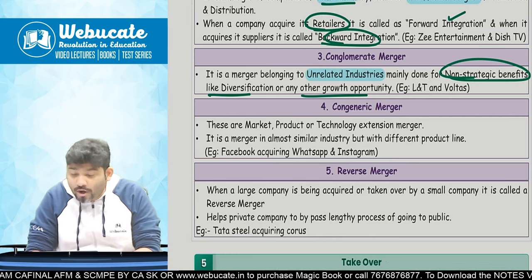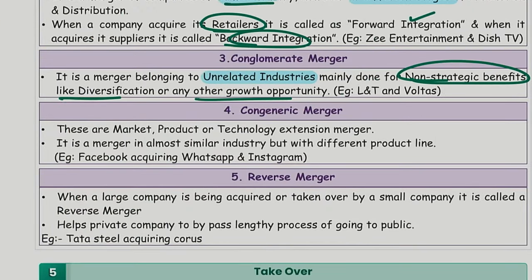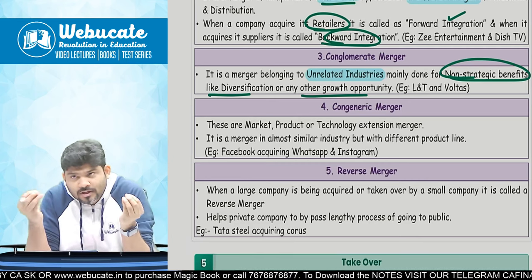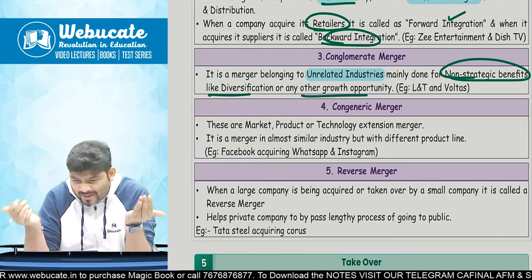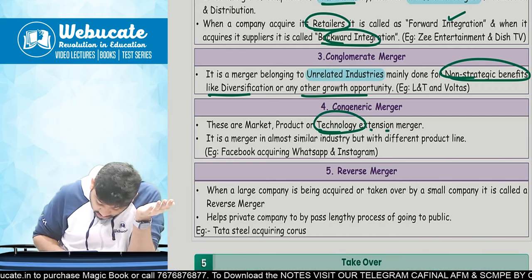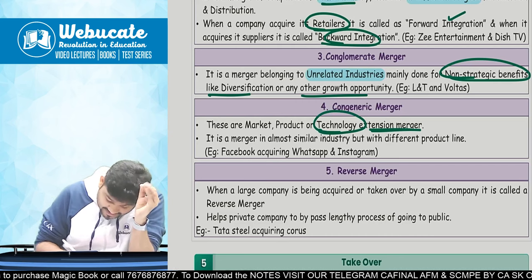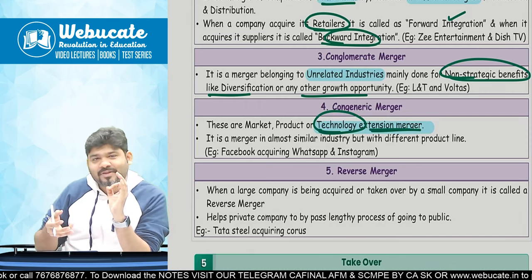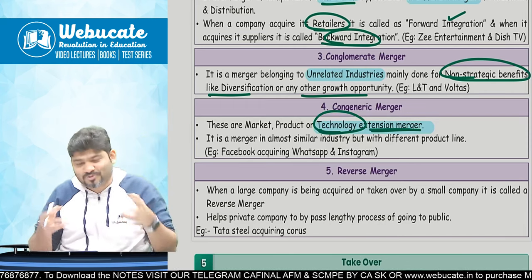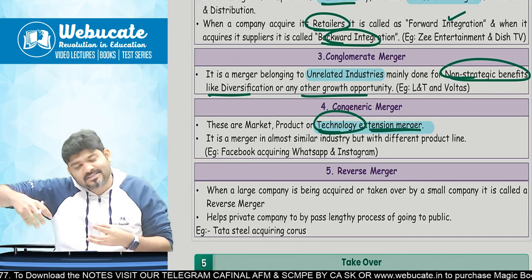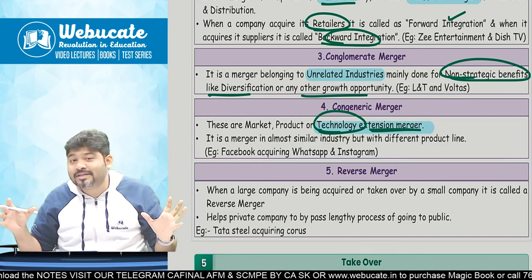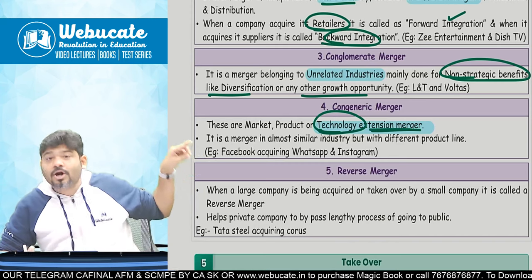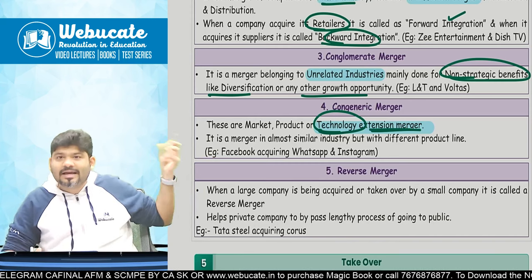Then we have co-generic merger — you are acquiring a company connected to you in terms of technology or packaging. These are market, product, or technology extension mergers; mainly they are technology extension mergers. Facebook acquiring WhatsApp and Instagram — Facebook knew both were going to be the next technology thing, so it acquired both. They are all now integrated. That was a co-generic merger. Then there is reverse merger — when a smaller company acquires a larger company.